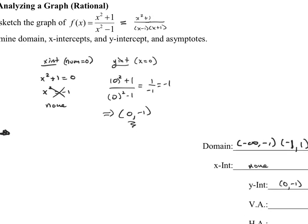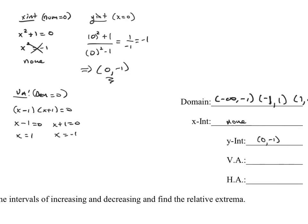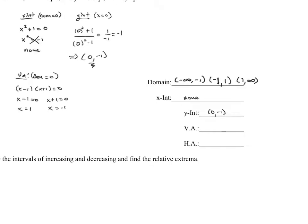Moving on to vertical asymptotes: once the function is factored and simplified, vertical asymptotes occur when the denominator equals 0. Using the factored form, x minus 1 equals 0 gives x equals 1, and x plus 1 equals 0 gives x equals negative 1. These must be written as two separate equations because they are lines, not numbers. The vertical asymptotes are x equals negative 1 and x equals 1.